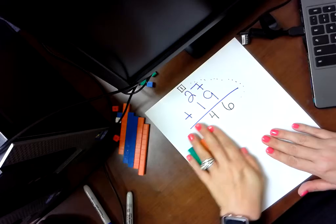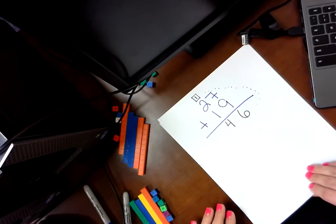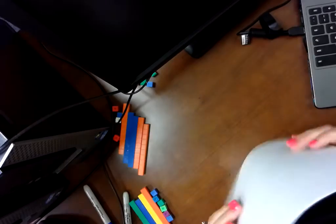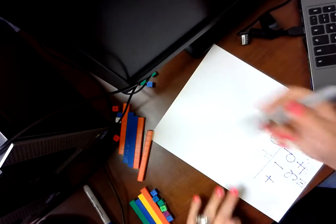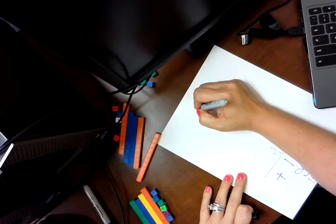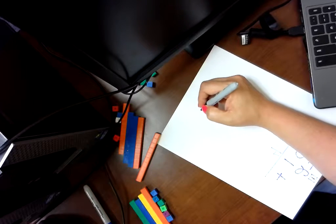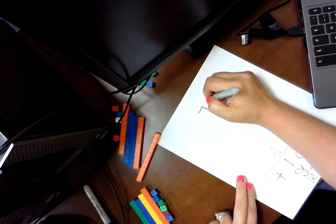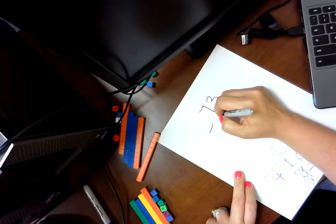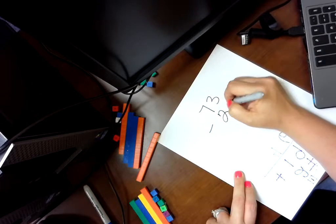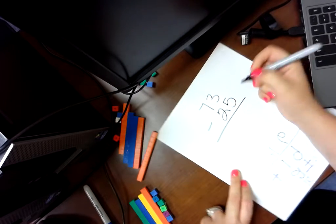Next, let's do a subtraction one. So we'll put this over. And we're going to do 73 minus 25.